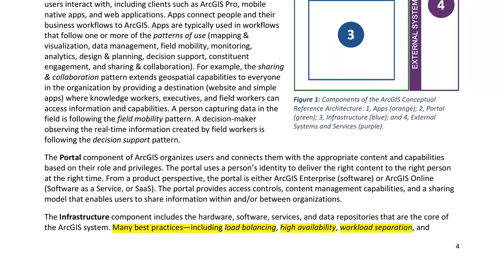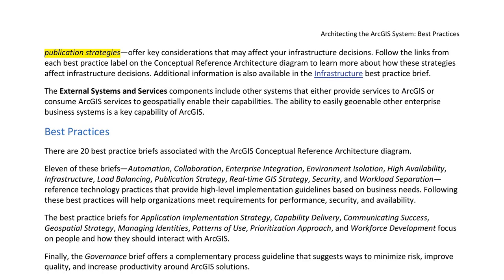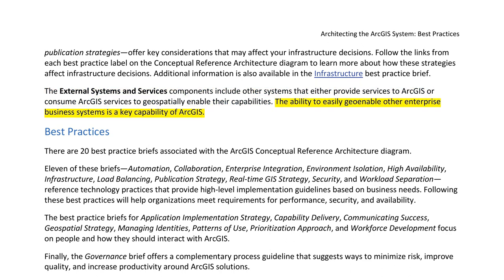Many best practices — including load balancing, high availability, workload separation, and publication strategies — offer key considerations that may affect your infrastructure decisions. Follow the links from each best practice label on the conceptual reference architecture diagram to learn more. The external systems and services components include other systems that either provide services to ArcGIS or consume ArcGIS services to geospatially enable their capabilities. The ability to easily geo-enable other enterprise business systems is a key capability of ArcGIS.